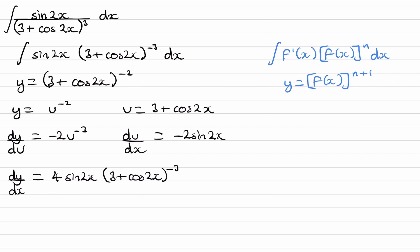Our goal is to figure out what differentiates to make this expression. If we can figure out exactly what differentiates to make this, that's what this integrates to. The expression y equals (3 plus cos 2x) to the minus 2 differentiates to give us pretty much what we're trying to integrate, but it's off by a factor of 4. So if we multiply by a quarter, the quarter carries through as a constant, and the 4 and the quarter cancel, making the differentiated form exactly what we're trying to integrate.